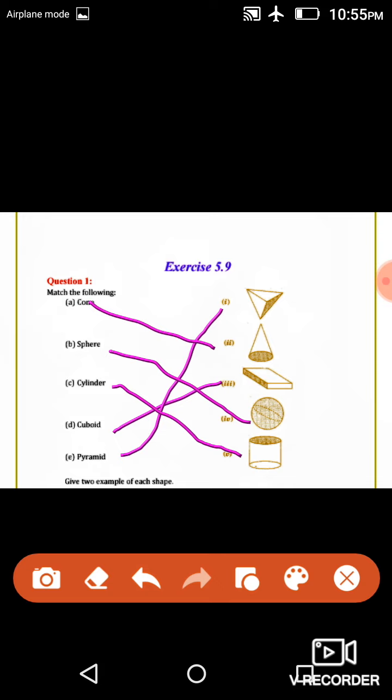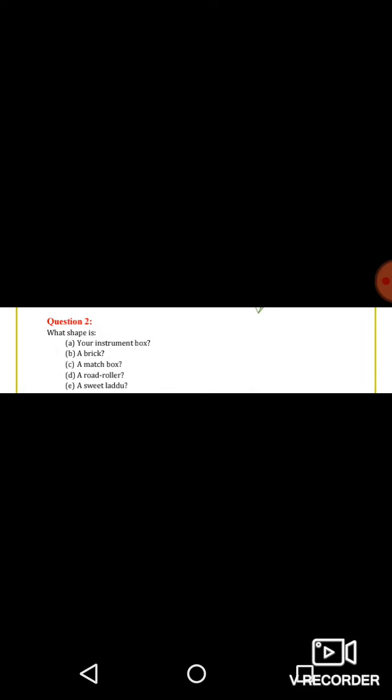Two examples of each shape. First match the following, then after that give examples of each: cone example, sphere example, cylinder example, cuboid example, and pyramid example. Two examples you have to write. Next question.